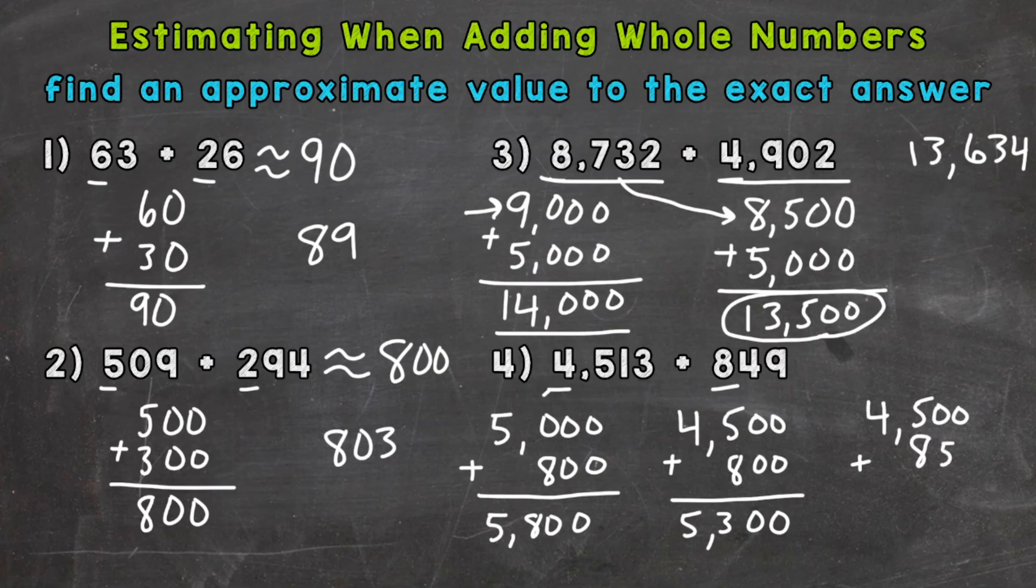Because again, the closer you round numbers to the original problem, the better your estimate is going to be. And this gives us 5,350.